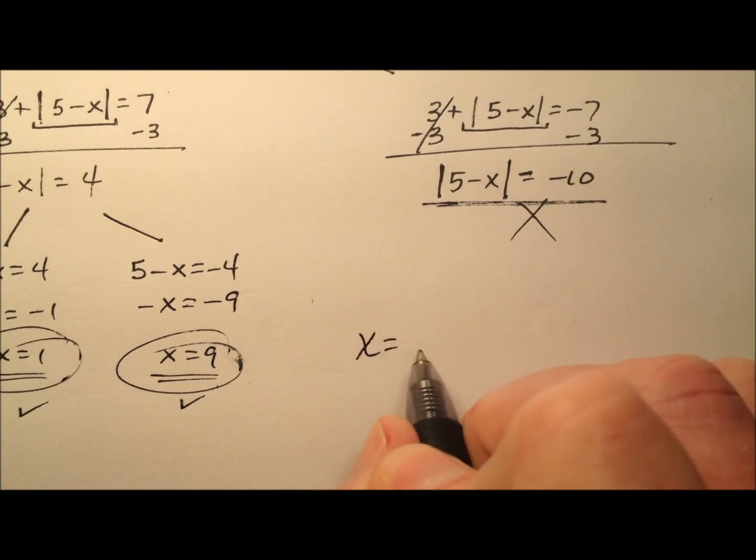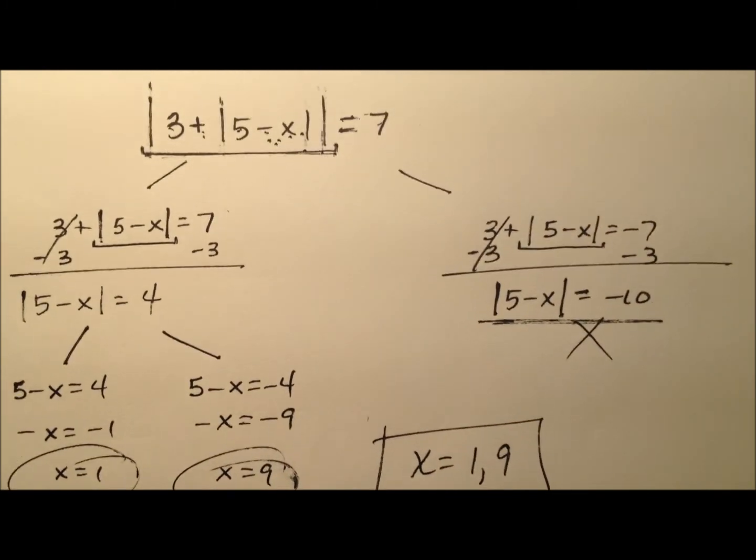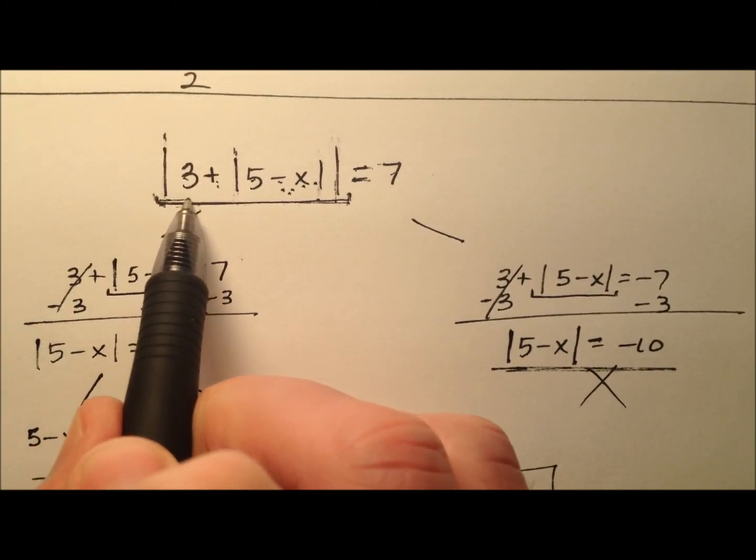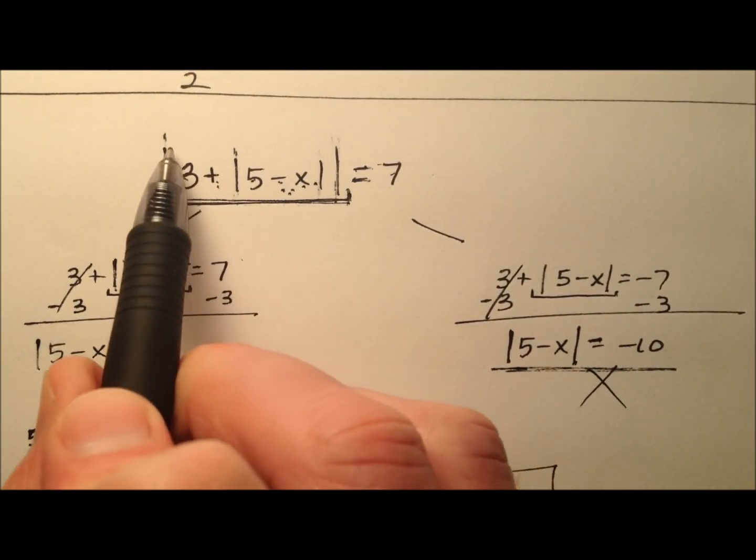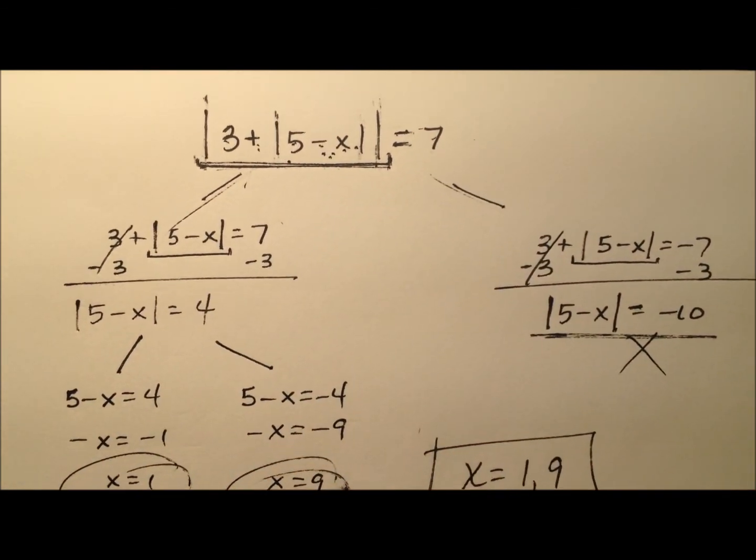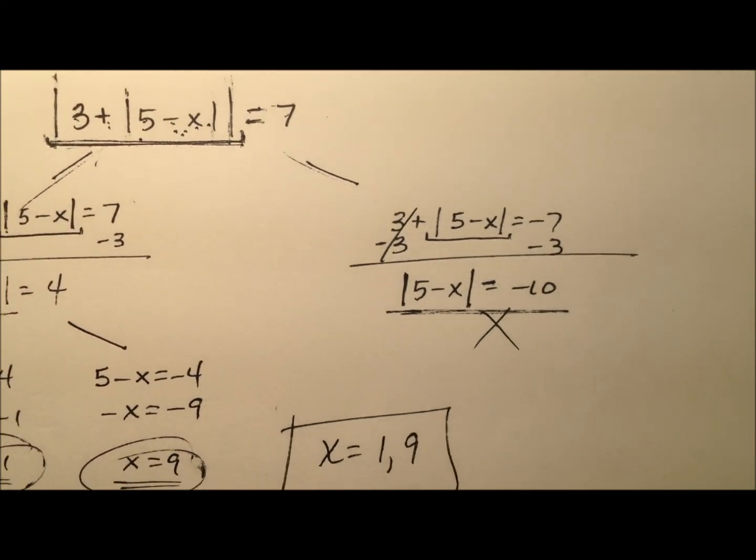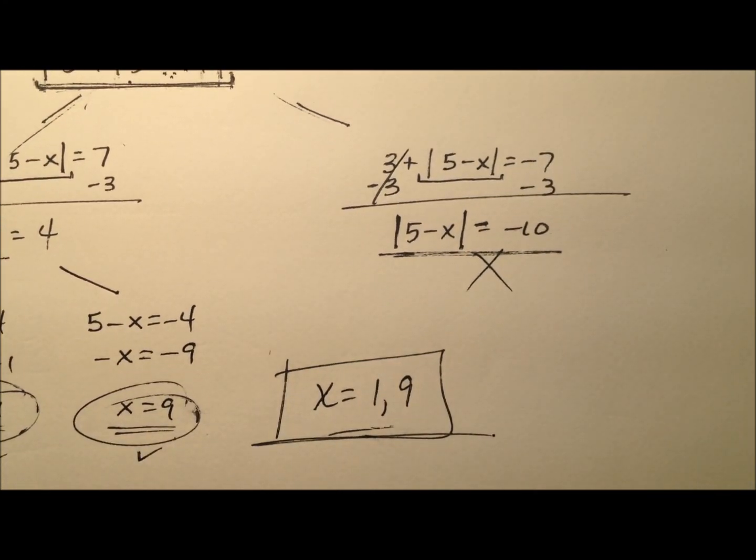So we can say here that x equals 1 and 9 and the way we did that is we had to start with the outermost absolute value expression, isolate him, work him like usual and then kind of whittle our way down until we had all the absolute value expressions taken care of. So there are our two values.